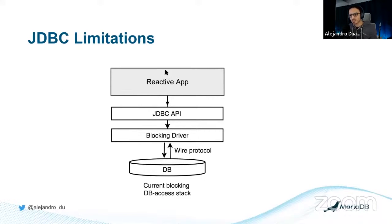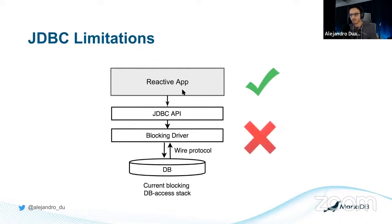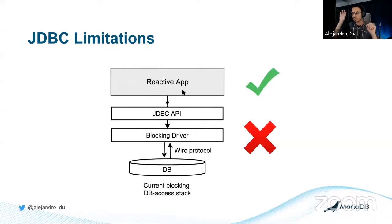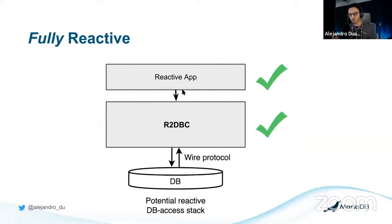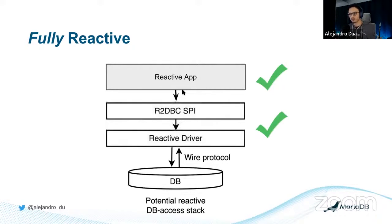If you have a reactive application but you're using the JDBC API — whether through JPA, JOOQ, or any other library — eventually you're going through a blocking driver, and when you have something blocking it's no longer truly a reactive system. From a web browser request to the server, that communication should be non-blocking. And from the server to the database, that should also be non-blocking — but JDBC doesn't allow that.